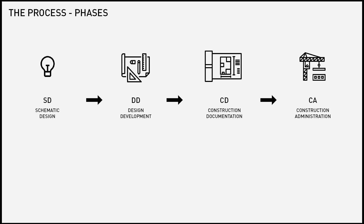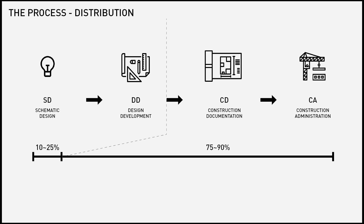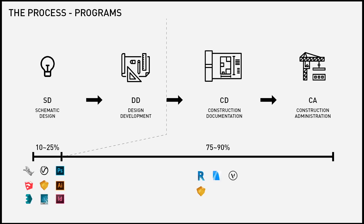The architectural process can be broken down into four phases: first is SD — schematic design, then DD — design development, construction documentation, and construction administration. In most companies, schematic and design development only takes up 10 to 25 percent of the actual time and budget spent on a project, and the remaining 75 to 90 percent is spent on CD and construction admin. Looking at the programs used for each phase explains why there's such high demand for BIM.